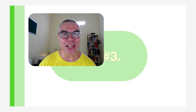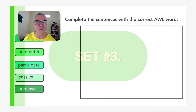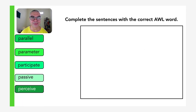All right everybody, welcome back. We're now into set number three of practicing the Academic Word List, with words that begin with the letter L going through to words that begin with the letter P. Let's get going. The first group of words: parallel, parameter, participate, passive, perceive.